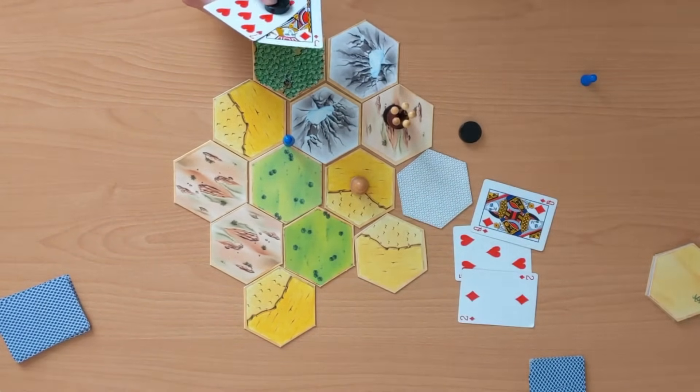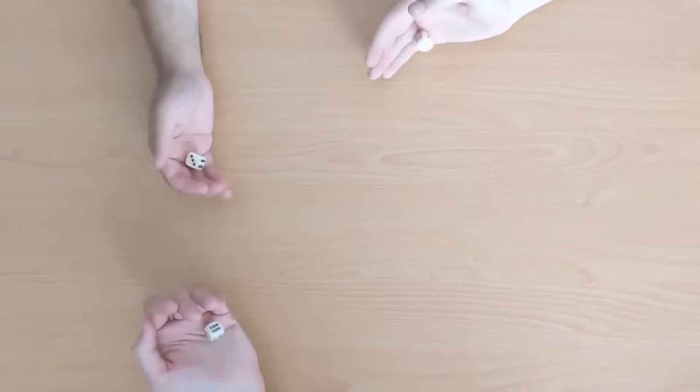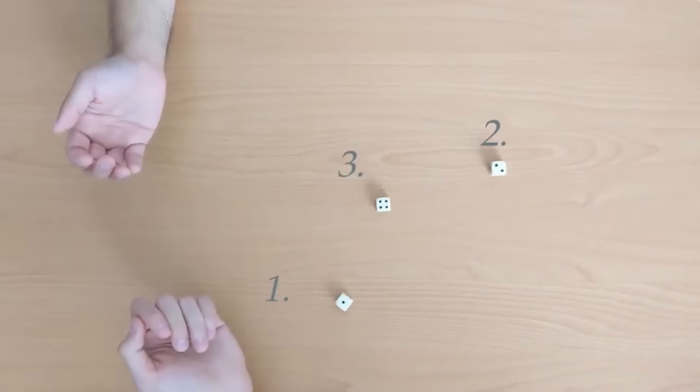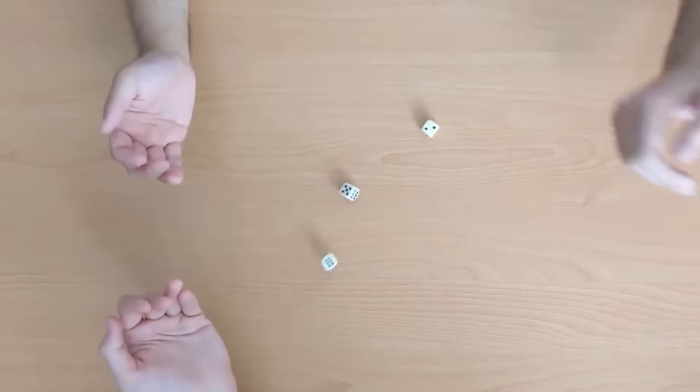But how do you achieve that? Well, you could give every player a die, each of them would throw it, and you would order them increasingly by the value they have thrown like this. But this doesn't quite work, because what should we do if there are ties?